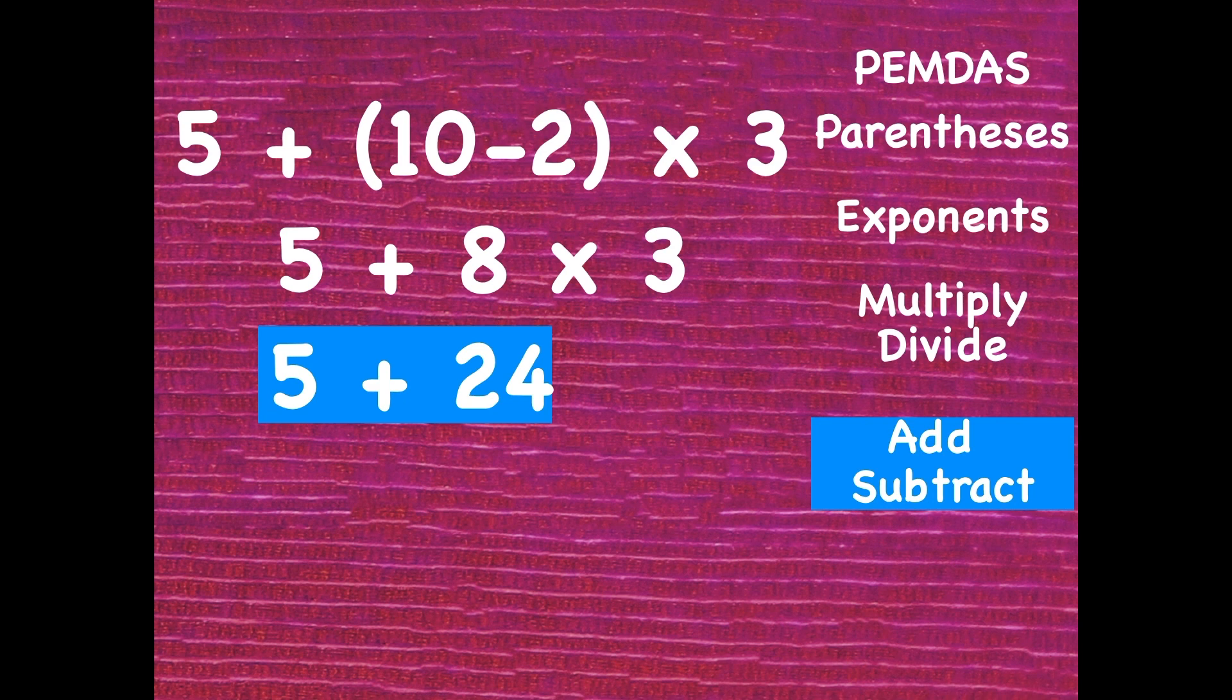So our next step says add or subtract whichever comes first. There's only addition so that's what we'll do. 5 plus 24 is 29. We can simplify this expression to 29. So 5 plus parentheses 10 minus 2 parentheses times 3 is just a long drawn-out way of saying 29. That's the value of this expression.